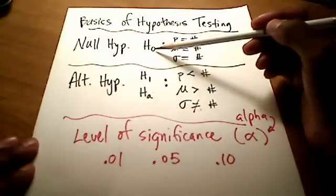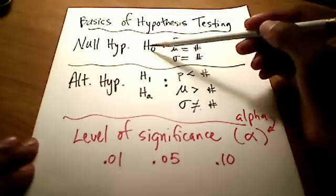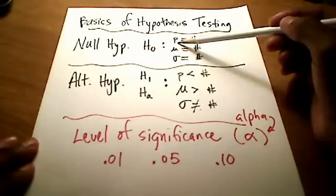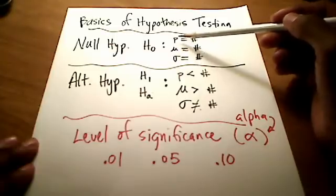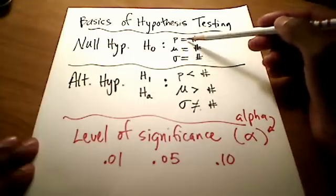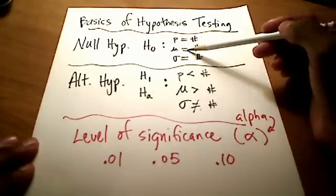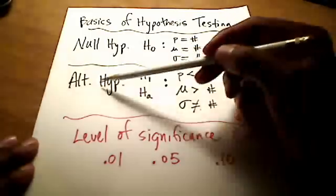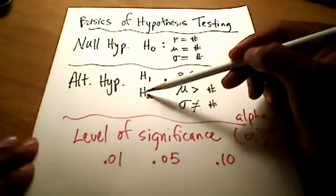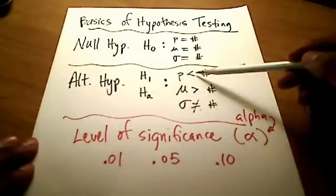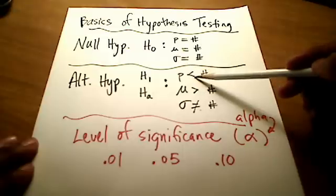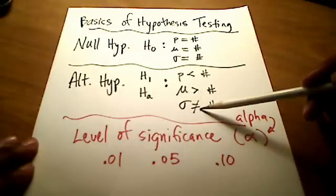Almost every book I've used uses H sub-zero or H-naught as the null hypothesis. And no matter what parameter you're talking about, whether it's a proportion or a mean or a standard deviation, the null hypothesis always uses an equal sign. The alternative hypothesis, maybe your book uses H sub-1 or H sub-A, always uses a symbol that is not an equal sign. So in this case, it's a less than symbol, or a greater than symbol, or a not equal to symbol.